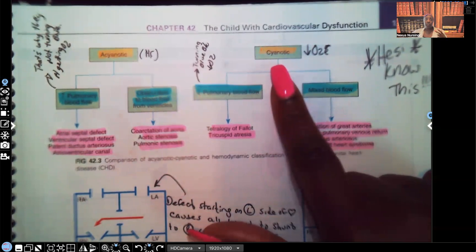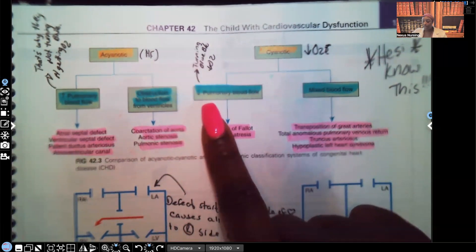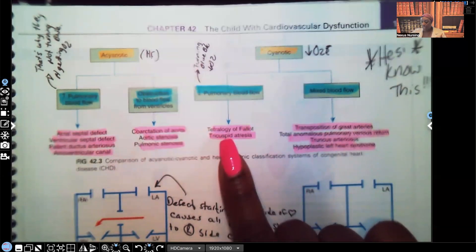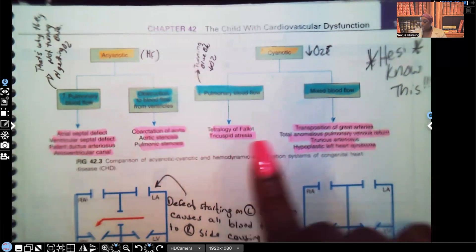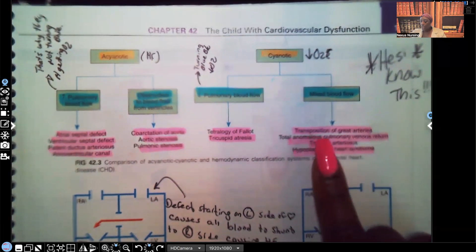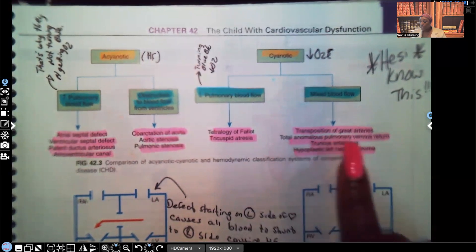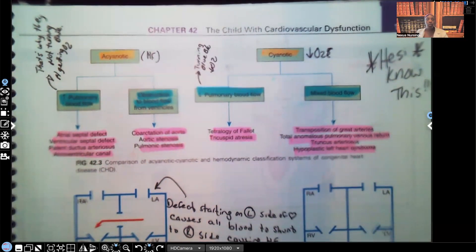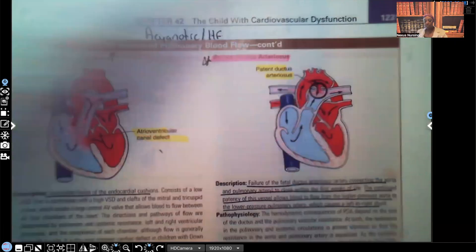Now for cyanotic, which means that patient is turning blue because of decreased oxygen. There are two reasons: decreased pulmonary blood flow and mixed blood flow. Under decreased pulmonary blood flow, you have tetralogy of Fallot and tricuspid atresia. Under mixed blood flow, you have transposition of great arteries, total anomalous pulmonary venous return, truncus arteriosus, and hypoplastic left heart syndrome. I'm only going to go over the ones that show up the most often on NCLEX, ATI, and HESI.